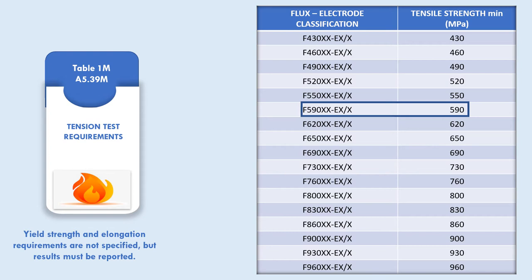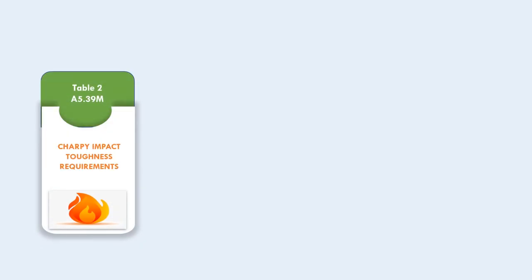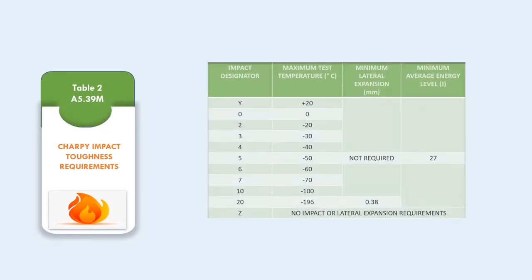For example, weld metal meeting the F590 requirement also meets the requirements for all designators with lower strength. Table 2 gives details about the Charpy impact toughness requirements.